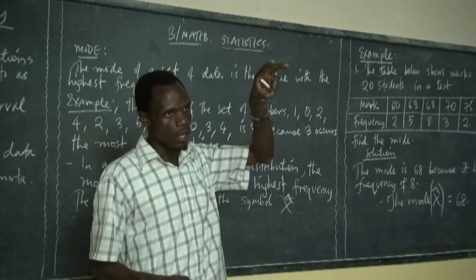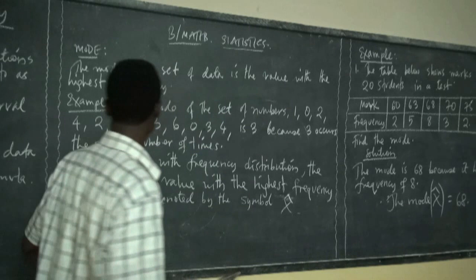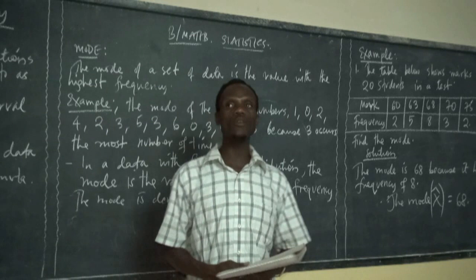The mode has the highest frequency — 'co-mode in a frequency kubwa' — we call it mode. And therefore, in a frequency distribution, the mode is the value with the highest frequency.